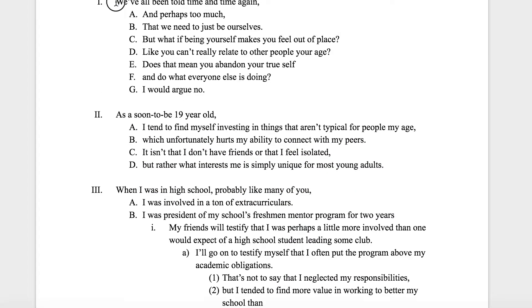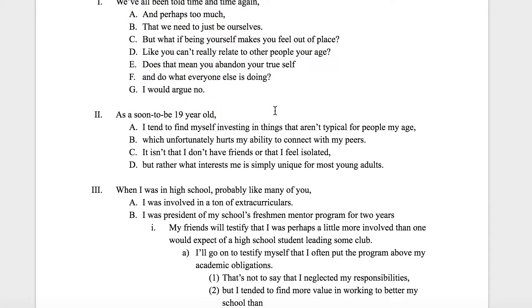Also notice how the sentences are broken down by line. For example: 'We've all been told time and time again, and perhaps too much, that we just need to be ourselves.' You may think this would all go on one line, but there's actually a reason why it doesn't — it has to do with how much you can say in one breath. Each line break corresponds to a natural breath point at a comma or pause. This helps you remember where things go and what comes next, and prevents you from talking too fast without breathing. Once you've got your outline together with your central idea, introduction, supports, and conclusion, all ready to go, the next step is to create cue cards.